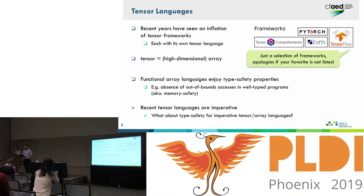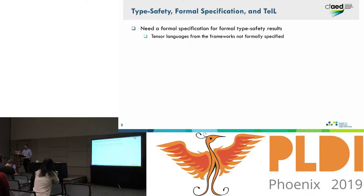A lot of this formal work on type safety has been done in the context of functional languages and functional array languages. However, the languages we see in these recent frameworks are essentially imperative. So we were wondering what is there to be said about type safety, or what is there to be proven by way of type safety about imperative languages. And of course before you can prove any property formally you need a formal specification of your language. The languages in these recent frameworks do not usually come with formal specifications.